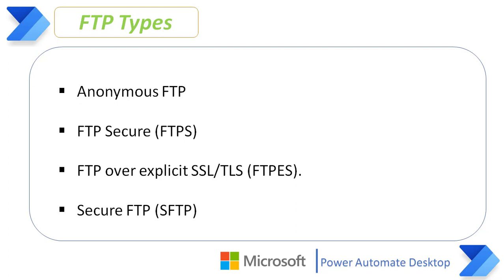Now we will see what are the several types of FTPs. There are several different ways an FTP server and client software can conduct a file transfer. These include: anonymous FTP, FTP Secure (FTPS), FTP over explicit SSL or TLS, and Secure FTP. We will learn about these FTP types in detail one by one.